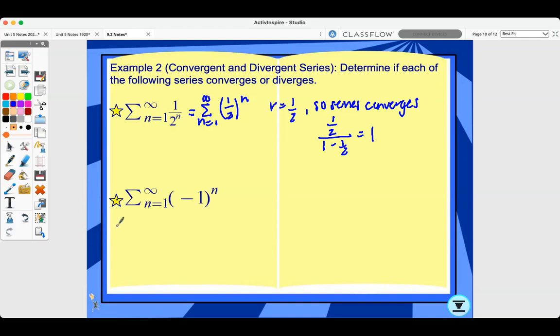For the second one, the sum of negative 1 to the n from n equals 1 to infinity. Here, r equals negative 1, so the series diverges, because the common ratio is not between 0 and 1 when I take the absolute value of that.